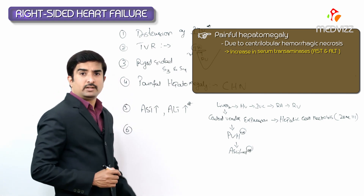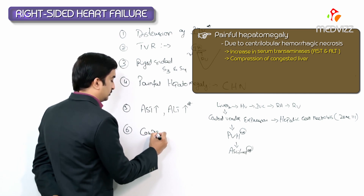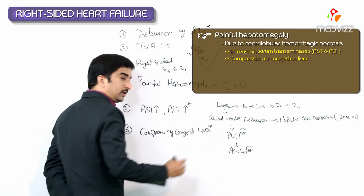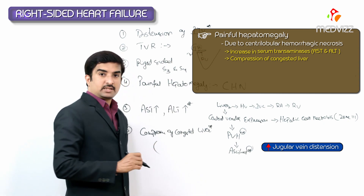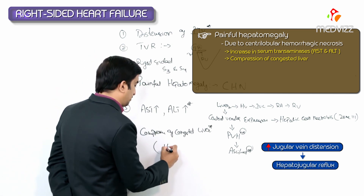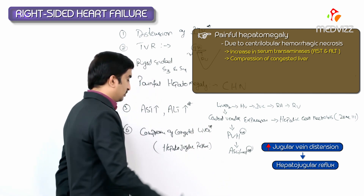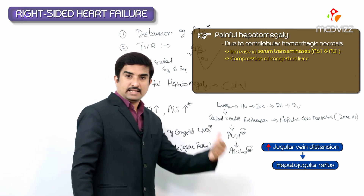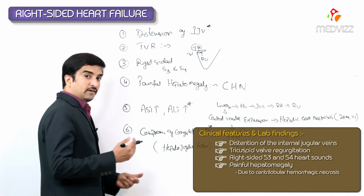Compression of the congested liver increases jugular neck vein distension. This is called the hepatojugular reflex. Compression of the congested liver increases jugular neck vein distension, and that is referred to as the hepatojugular reflex.